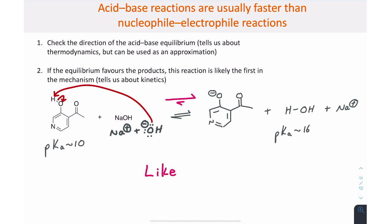In the example on screen, the products have the weaker of the two acids, and so the products are favored. If the acid-base equilibrium favors the products, this reaction is likely to be the first in the mechanism.